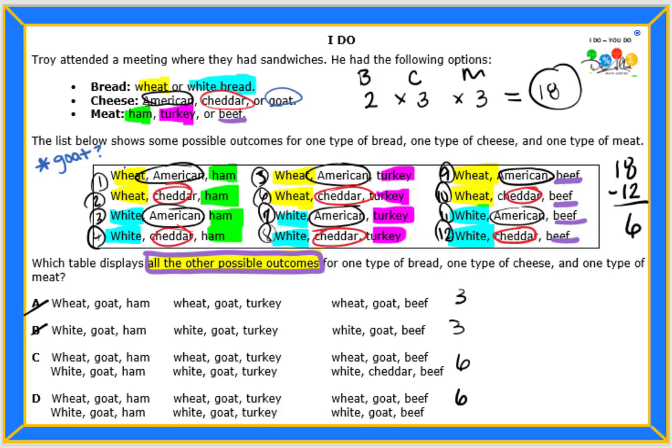We would have to repeat the exact same thing that we have up here in the list, but replace the cheese with goat. So if we look at letter C, we have goat cheese everywhere. But look right here, cheddar. White cheddar beef. We have it already right here. White cheddar beef. This is not missing. This is already in the list. So this is a repeat. And we don't want repeats. So that is not correct.